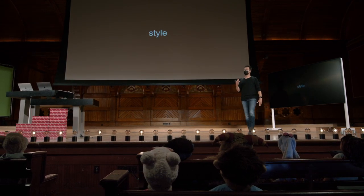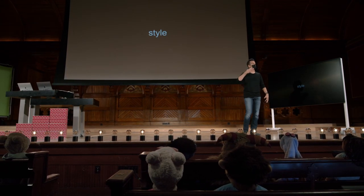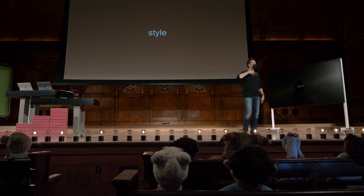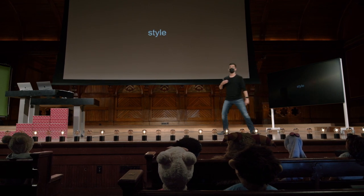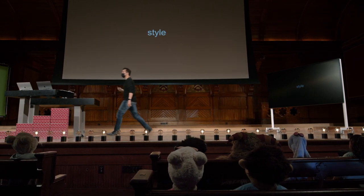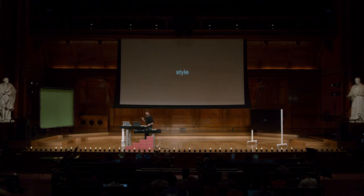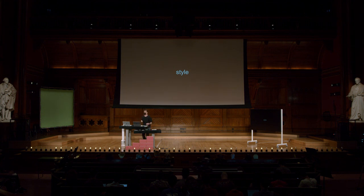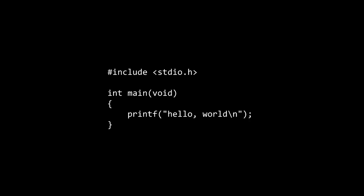Mas você só precisa começar a adquirir o hábito de escrever código de uma certa maneira. Então, essas três bases, por assim dizer — correção, design e estilo — são realmente os objetivos gerais ao escrever código.